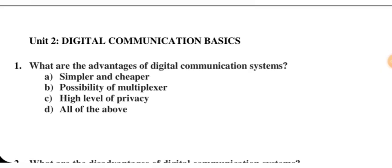First question: What are the advantages of a digital communication system? Options include simpler and cheaper implementation, possibility of multiplexing, high level of privacy, or all of the above. In this case, all of the above is true for digital communication, so D is the correct option.